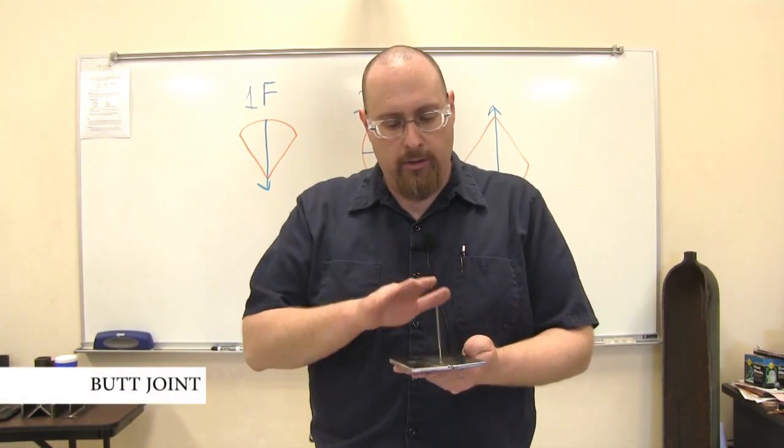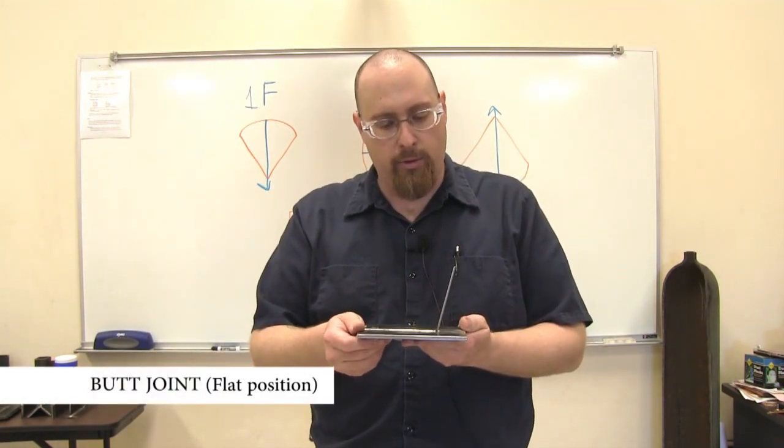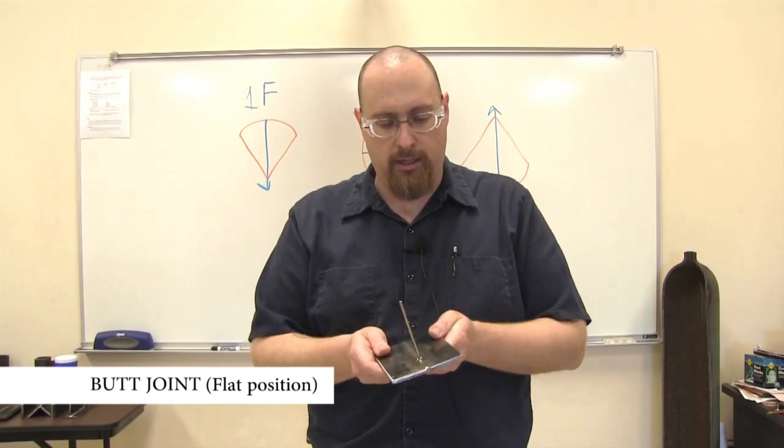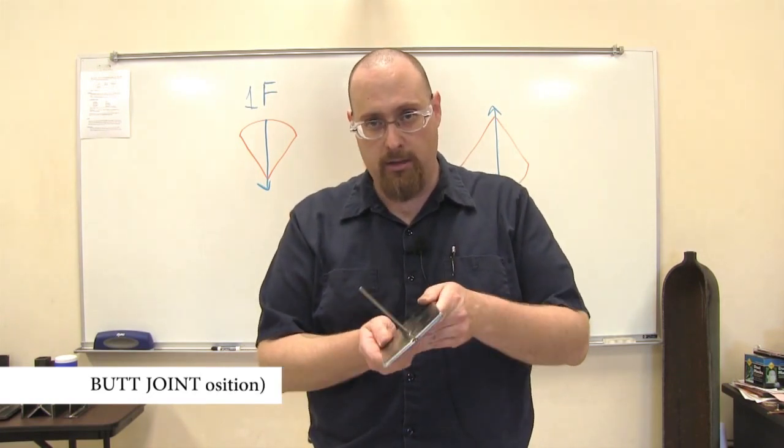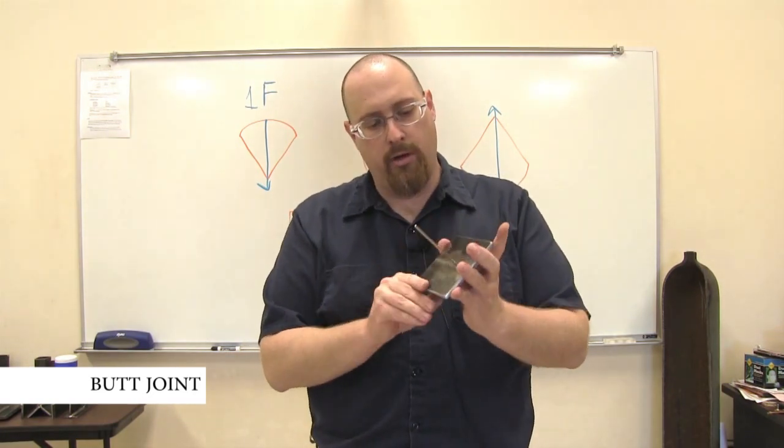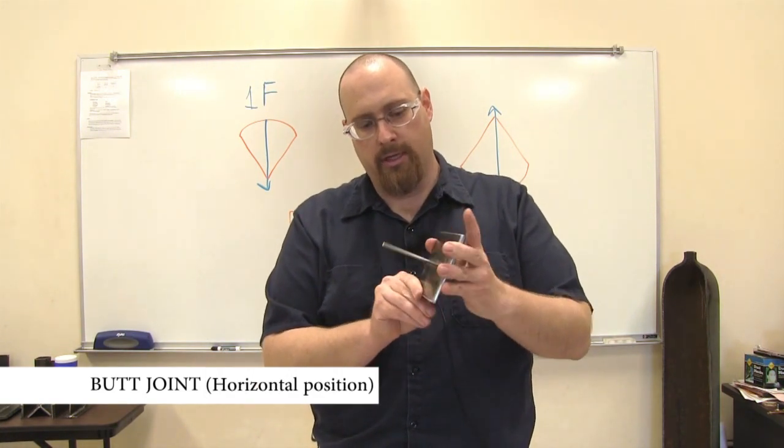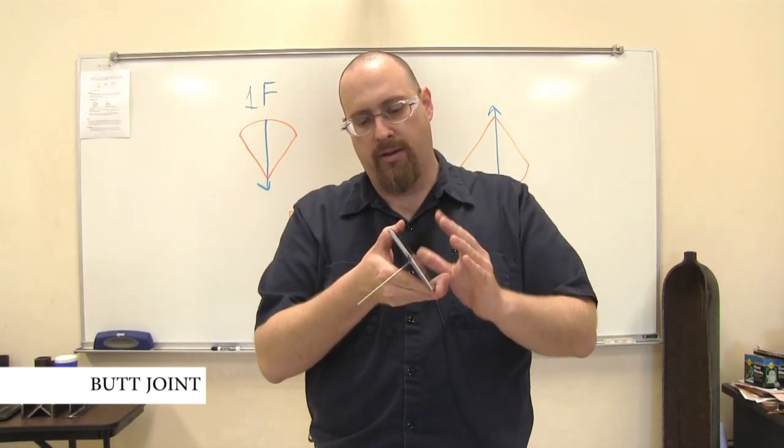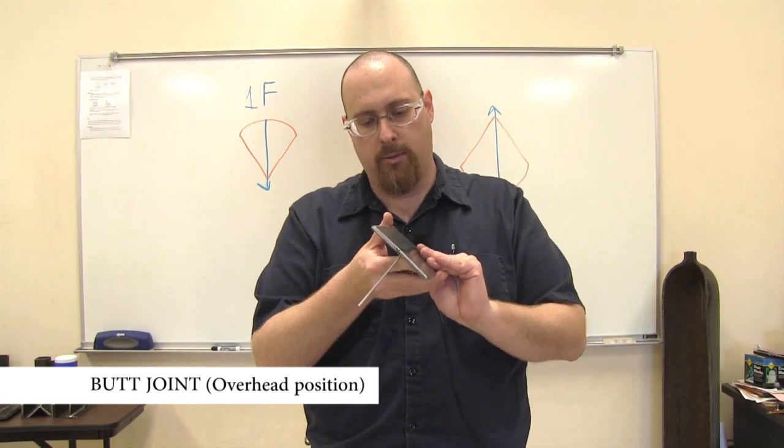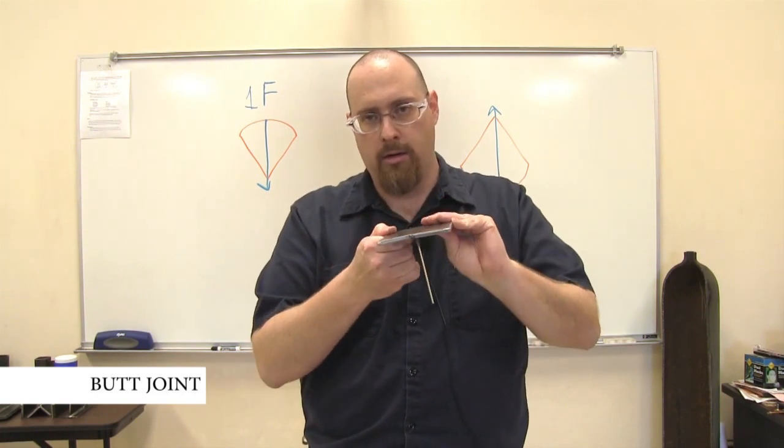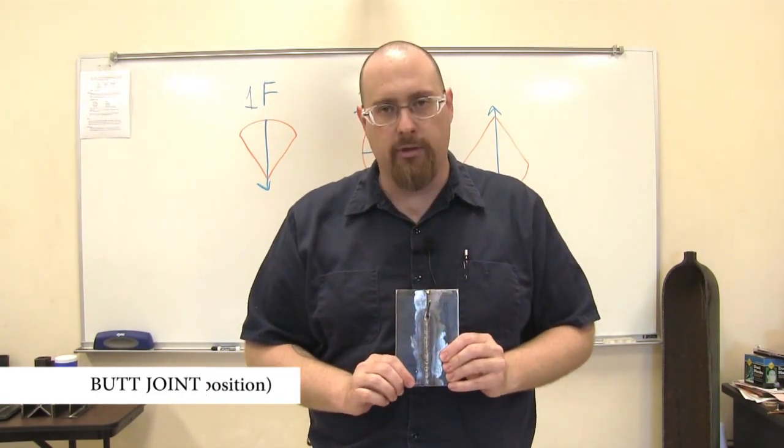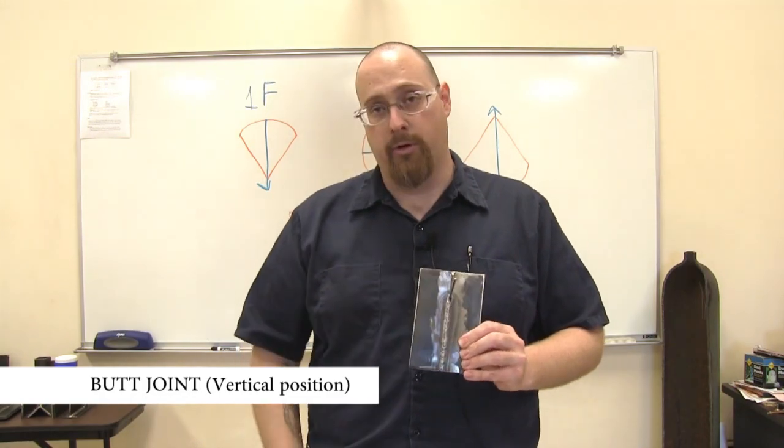On our groove welds we have our flat where we're pointing straight down to the ground and it can be from here to here. Then we have our horizontal like this. And then we have our overhead anywhere from here to here. And our vertical is going to be like that. In this case we're going vertical up.